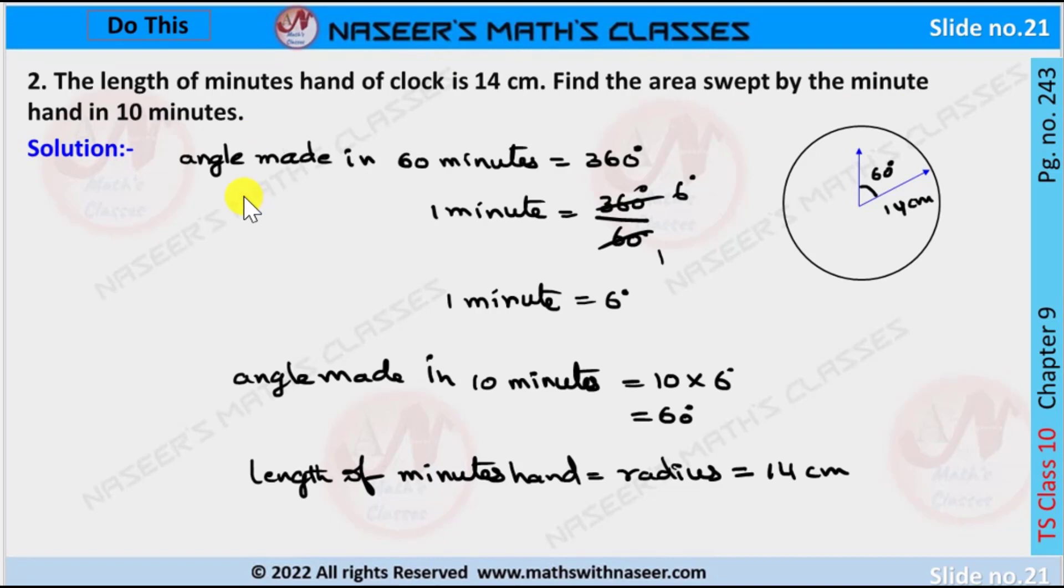We already know angle made in 60 minutes is equal to 360 degrees. Then angle made in one minute is equal to 360 degrees by 60, which equals 6 degrees. Angle made in 10 minutes is equal to 10 into 6 degrees, which equals 60 degrees.